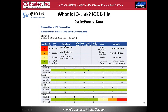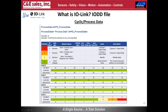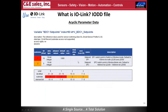If you only want to use process data, you can do so without using AOIs or function blocks for acyclic data. The acyclic parameter data shows items like channel one output state, set point one, and set point two — each with an index number and sub-index number. These are what you reference when using AOIs and function blocks to read or write parameter values.